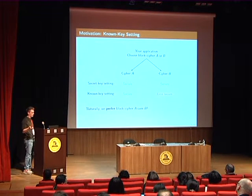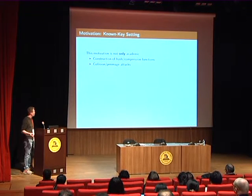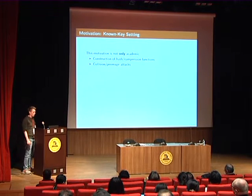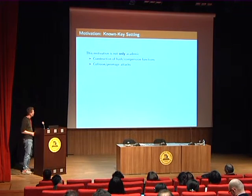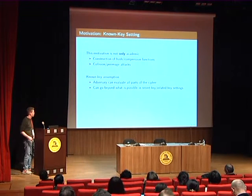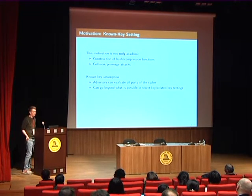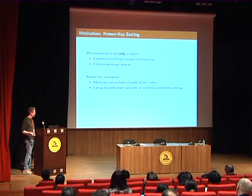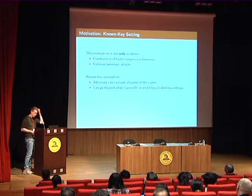This motivation for the known-key setting might sound a little academic, but we don't think it is. Because if you think about constructing compression functions or hash functions from block ciphers, then it is exactly cryptanalysis in the known-key setting that you can use to do collision or pre-image attacks. In the known-key setting, the adversary is able to evaluate all parts of the cipher, whereas in the secret key setting you typically have access to some input and output. In this stronger assumption, we can really go beyond what you can do in the secret key or related key setting.